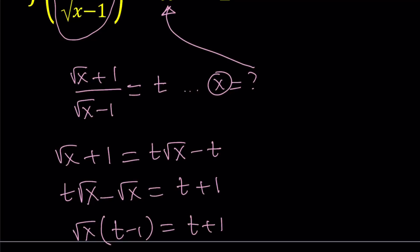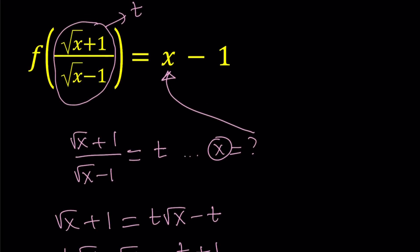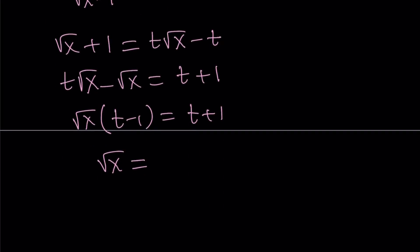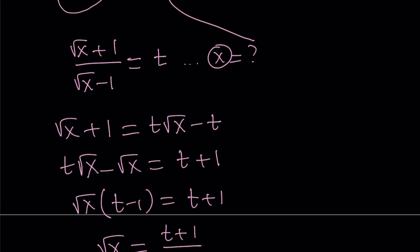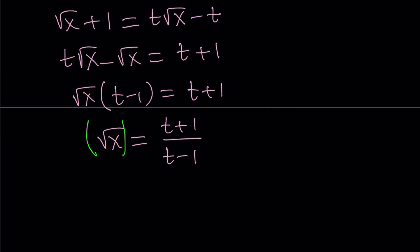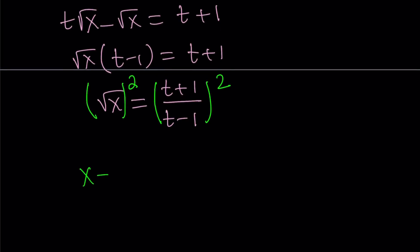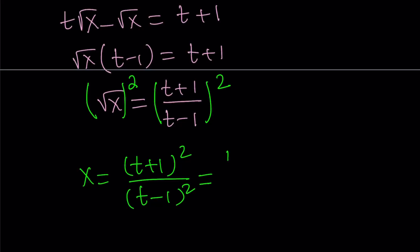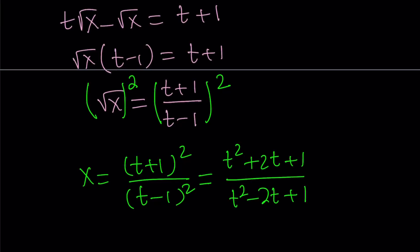Sometimes folks are confused: when we change variables, does it become a different function? Sort of — the domain is not actually going to change; the values are going to be compatible. So from here, square root of x can be written as t plus 1 divided by t minus 1. Since our goal is to find x, let's square both sides. We get x equals t plus 1 quantity squared divided by t minus 1 quantity squared, which expands to t squared plus 2t plus 1 divided by t squared minus 2t plus 1.